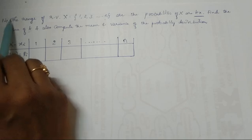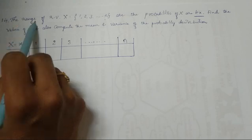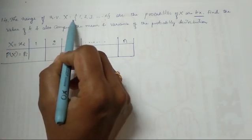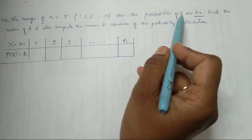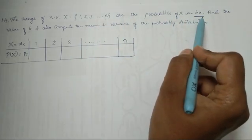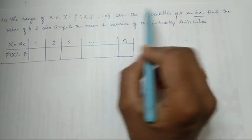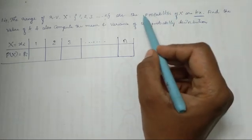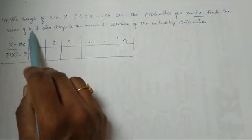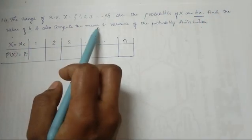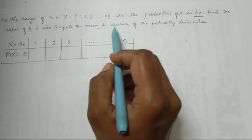Now let us continue the problems. The 14th problem: the range of random variable x is from 1, 2, 3 so on up to n, and the probabilities of x are kx. That is, for these values of x, the corresponding probability values are kx. Find the value of k, and also compute mean and variance.